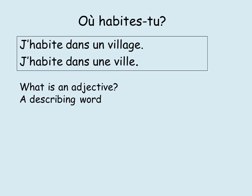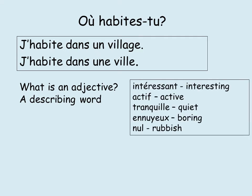Our focus is looking at adjectives. Hopefully you remember an adjective is a describing word — it describes the noun. Can you think of any adjectives in English, and then any in French? Jot some down on your paper. The ones we're going to focus on today are: intéressant, actif, tranquille, ennuyeux. I've picked these specifically because they show the different rules.